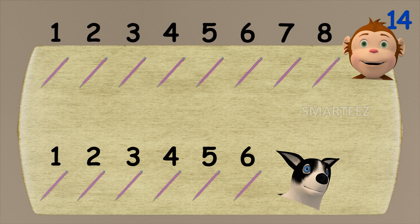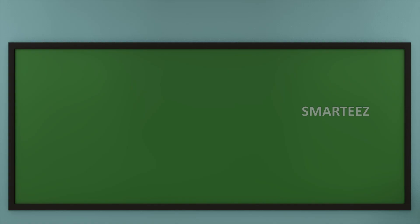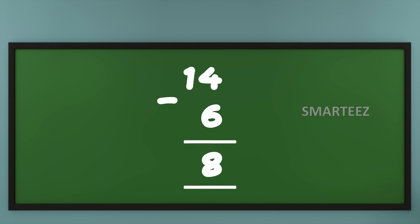By now you already know that's what we call subtraction. Here we say when we subtract six from a total of fourteen, we get eight remaining. Yes, removing or reducing is called subtraction.